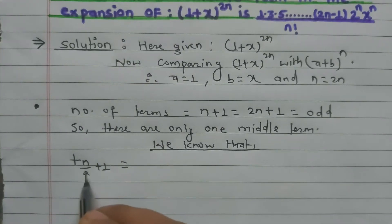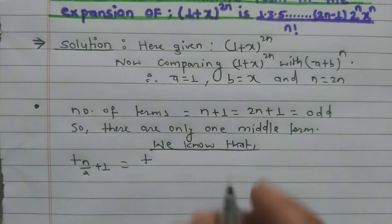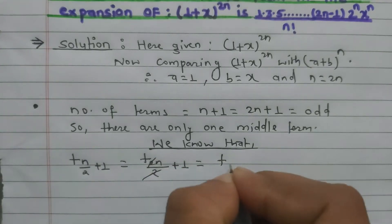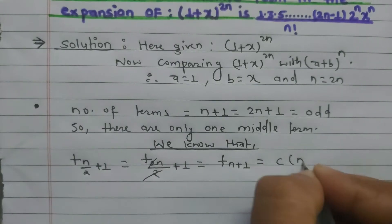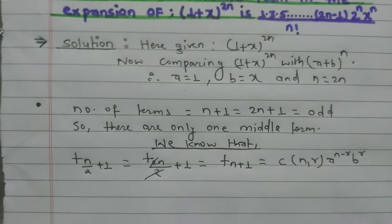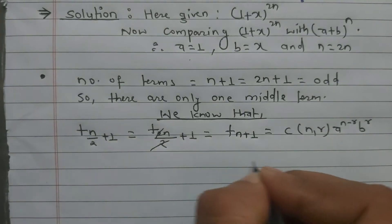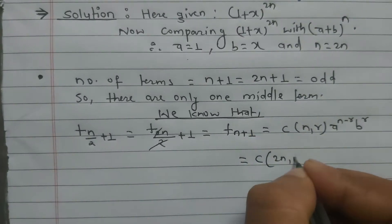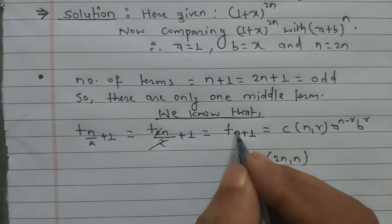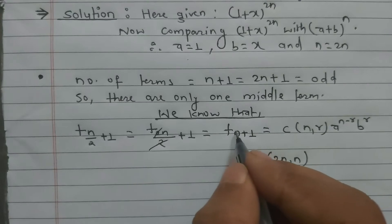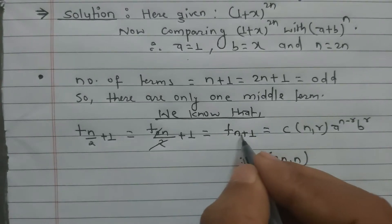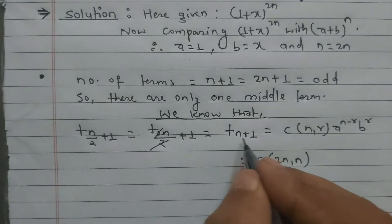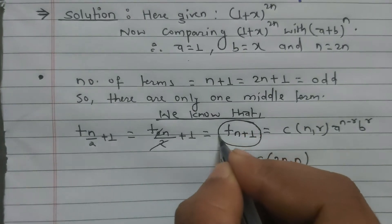So applying the middle term formula with n = 2n: T_(2n/2 + 1) = T_(n+1). The general term formula is T = C(n,r)·a^(n-r)·b^r. We substitute: C(2n, r) where r = n. To get the value of r, we subtract 1 from the term index — for T_(n+1), r = n.